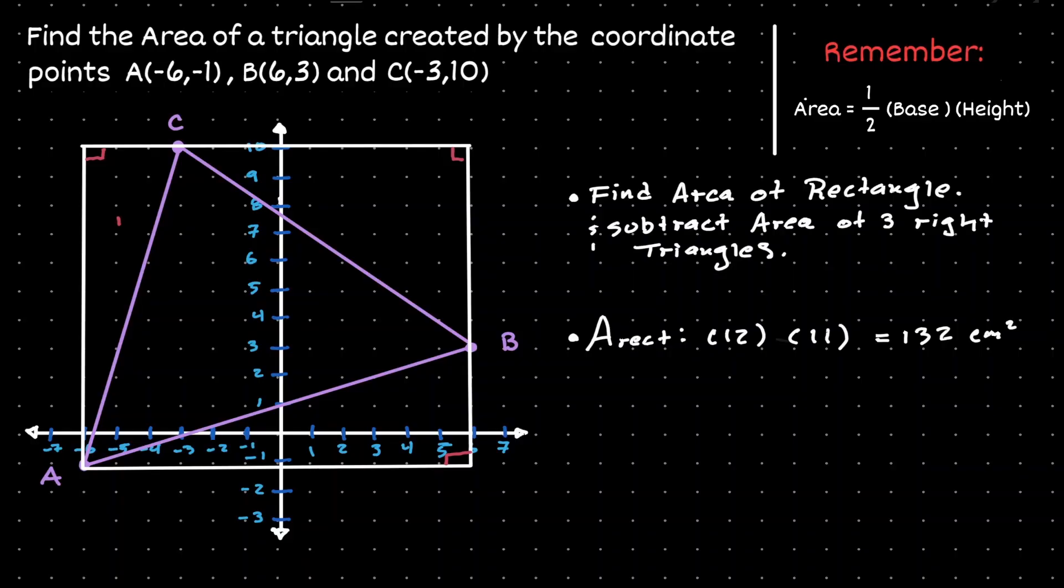Now let's call this triangle, triangle 1. That will be 1/2 times the base, which notice the base is of a length of 3, times the height, which is a length of 11. That will give us a total of 16.5.